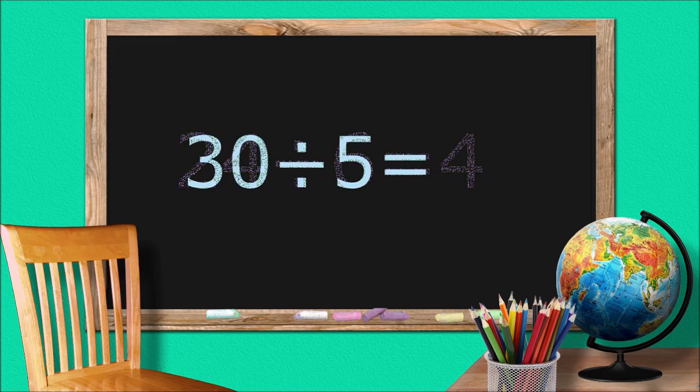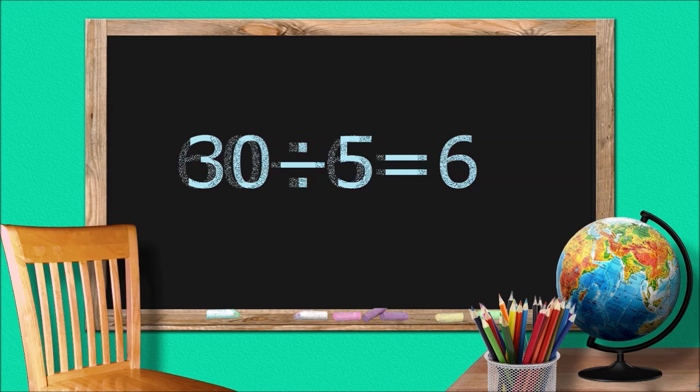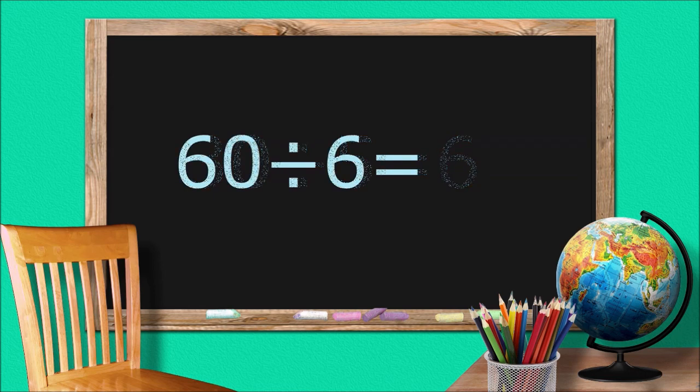30 divided by 5 equals 6. 60 divided by 6 equals 10.